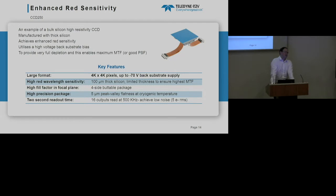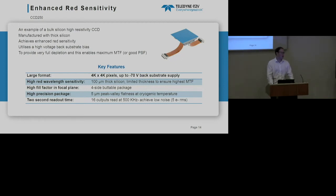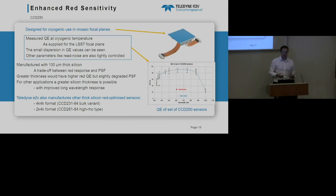The CCD 250 is the device in the LSST array. It is 150 microns thick, giving good red sensitivity without sacrificing PSF too badly. It comes in a four-side buttable package — a rather delicate one, with nothing around the edges, so poor handling breaks the sensor. We've made a couple of hundred of these for LSST. It achieves about 20–25% quantum efficiency at 1000 nm, but as mentioned there is a trade-off: greater thickness gives more red sensitivity but slightly degraded PSF performance.